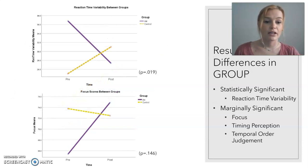Looking at differences in group, I found statistically significant differences in reaction time variability. Reaction time variability is the variability score computed between the first and the second reaction time tests. As you can see in the graph at the top, there was a significant decrease of reaction time variability means between my two groups, the experimental and the control group.